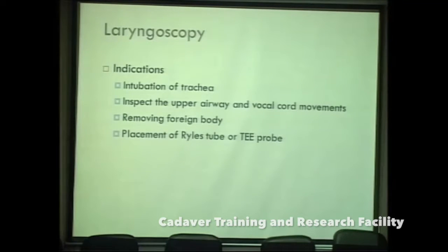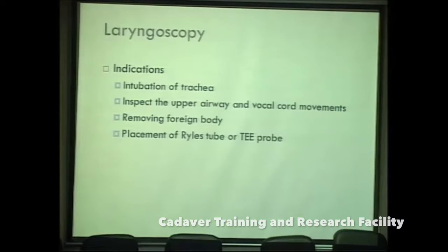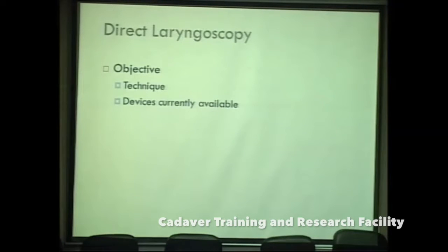The indications of laryngoscopy include intubating the trachea, inspecting the upper airway or oesophagus for foreign bodies, placing nasal tubes, and sometimes placing transesophageal echocardiography probes. We will now discuss direct laryngoscopy — the technique and devices available.